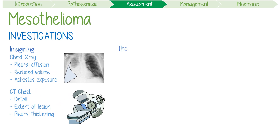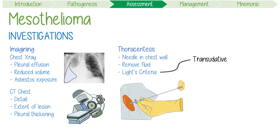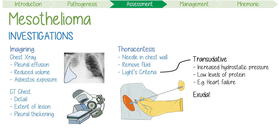After imaging, more definitive tests might be performed. A thoracocentesis is indicated if there's evidence of pleural effusion. This is a needle inserted through the chest wall into the pleural space, which can remove fluid and determine whether the liquid is transudative or exudative using Light's criteria. Transudative fluid accumulation occurs because of an increase in hydrostatic pressure, producing a watery liquid with low protein levels — one cause being heart failure. An exudative pleural effusion, on the other hand, occurs because of inflammation due to cancer or infection, with fluid drawn into the pleural space by the osmotic effect of high protein levels. Mesothelioma is a good example of this.